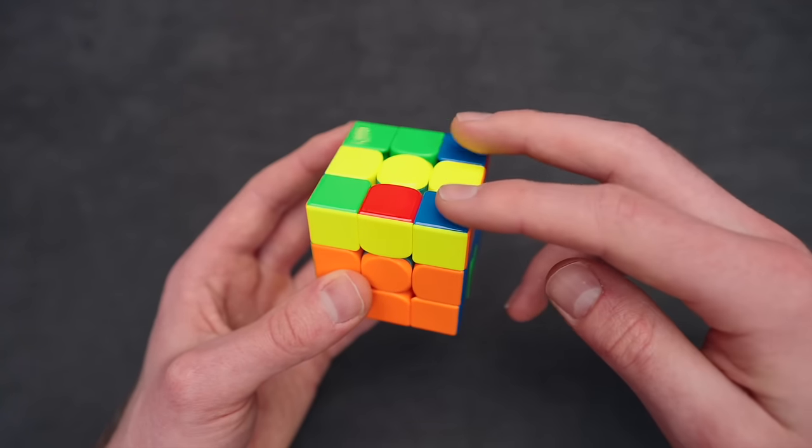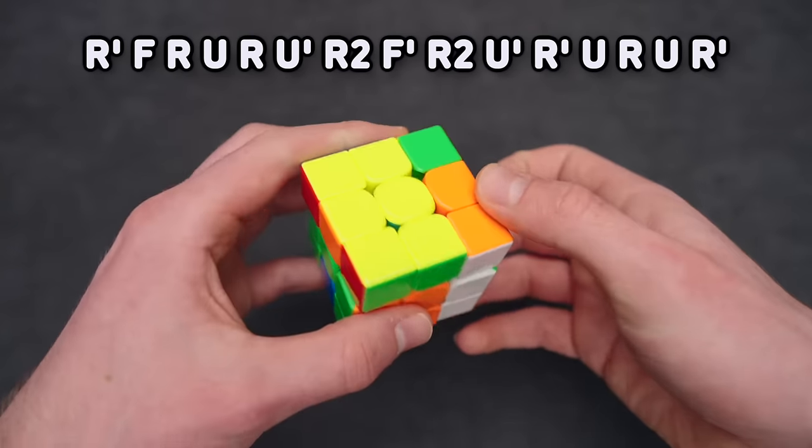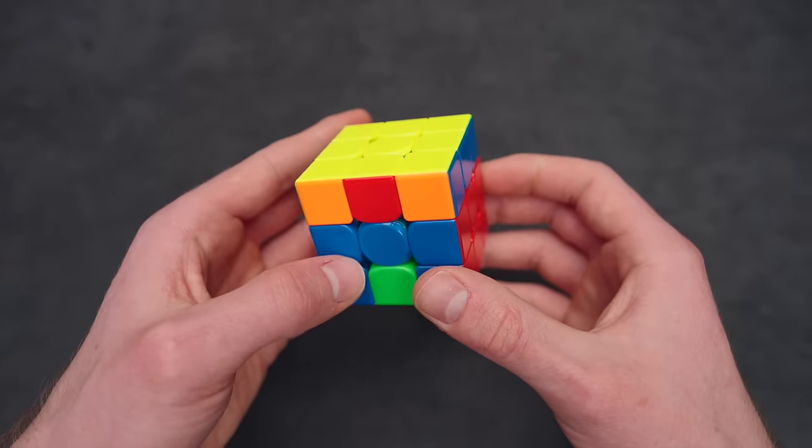But there's one good thing though, because these two are the same. And these two, I know that if I do the Colin Burns algorithm, which goes like this, I solve the corners. So when I rotate back, I notice something.